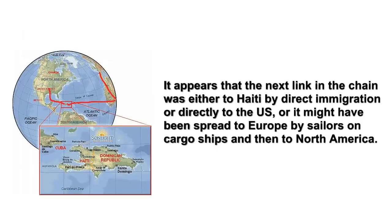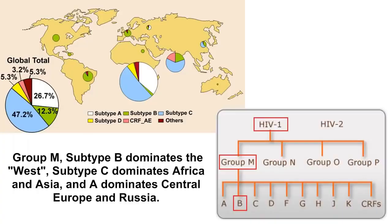It appears that the next link in the chain was either to Haiti by direct immigration, or directly to the US, or it might have been spread to Europe by sailors on cargo ships and then to North America. The data is a bit spotty, but the emergence in the major cities of Europe was slightly after the disease was documented in New York and San Francisco. Asia and Russia may have been infected by a second wave of emergence, as their subtype profiles are markedly different than the European and North American subtypes.